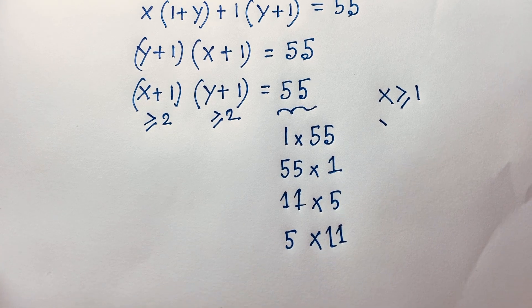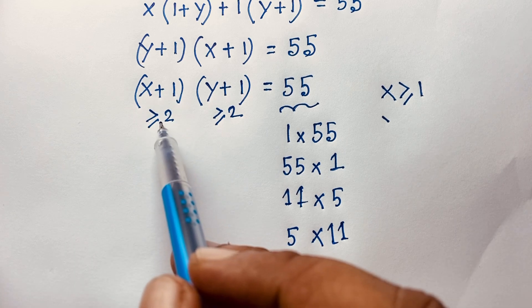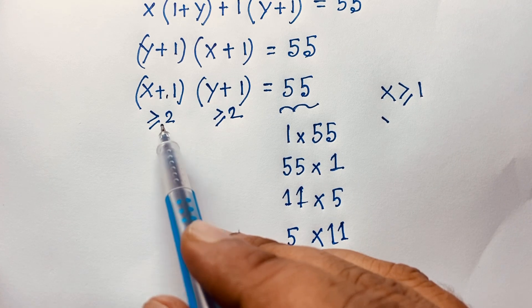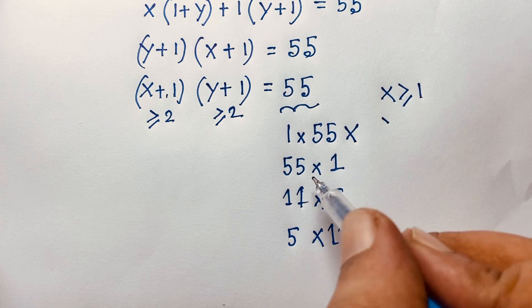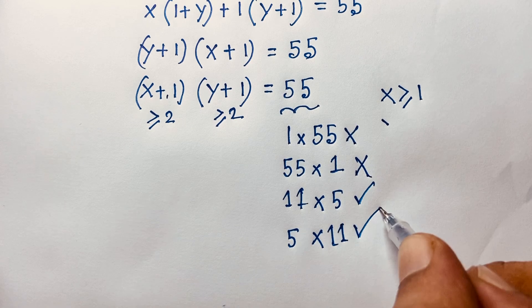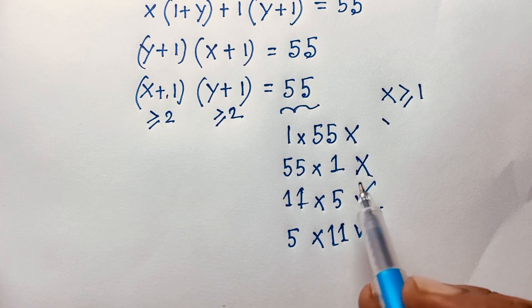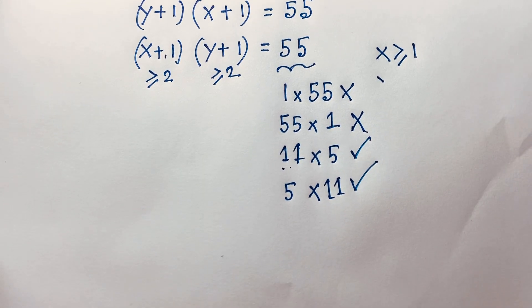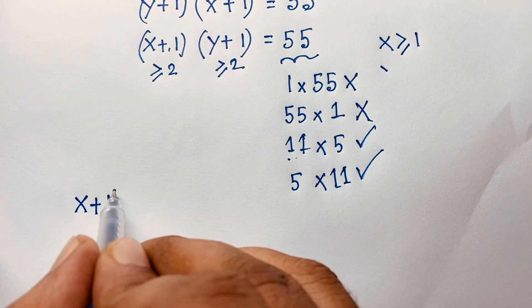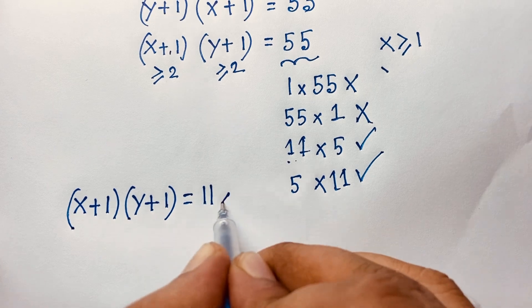Since x plus 1 and y plus 1 are both greater than or equal to 2, the cases 1 times 55 and 55 times 1 are not possible. So the valid cases are 11 times 5 and 5 times 11. For the first case: (x plus 1)(y plus 1) equals 11 times 5.